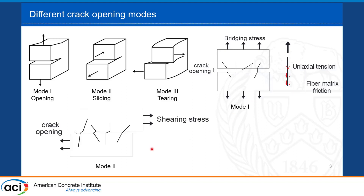In the case of a Mode 2 crack, when we have sliding of the crack plane, some inclined fibers will be subjected to tension, but most fibers will resist or transfer the force through dowel action across the crack. In this case, dowel action governs the behavior, and we expect it may not necessarily be related to the uniaxial behavior — it will depend more on the lateral stiffness or lateral strength of the fiber, depending on the fiber material.